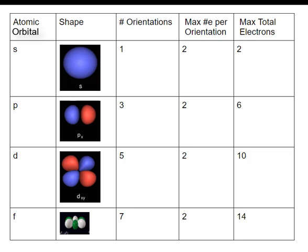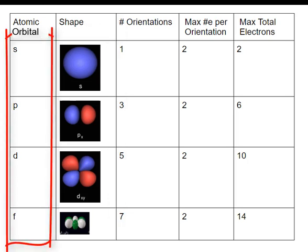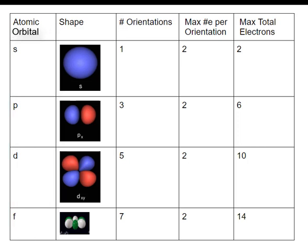Let's take a look at the shapes of space that electrons might be in around the nucleus, which quantum theory predicts. There's the S shape, the P shape, the D, and the F shape. These shapes are called atomic orbitals, and they're centered around the nucleus.